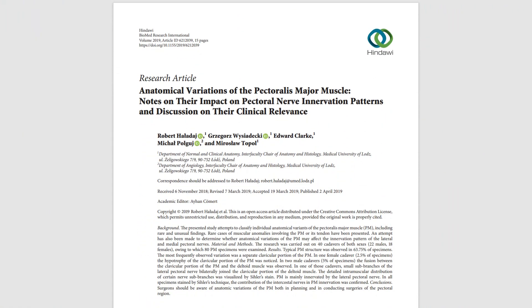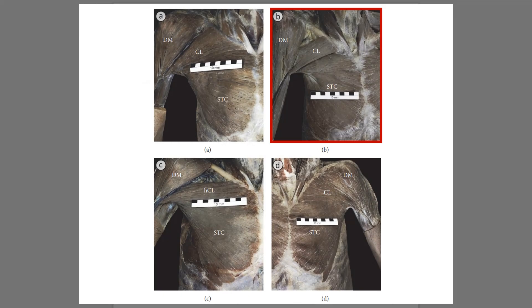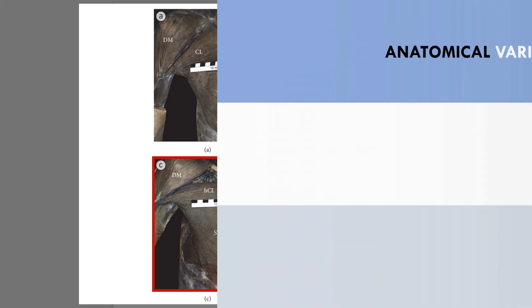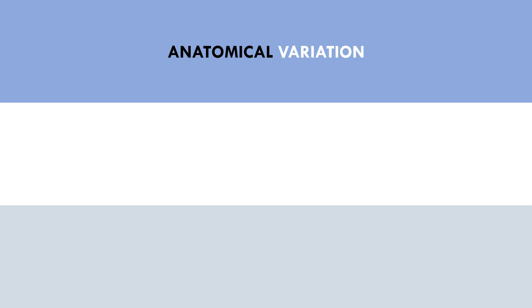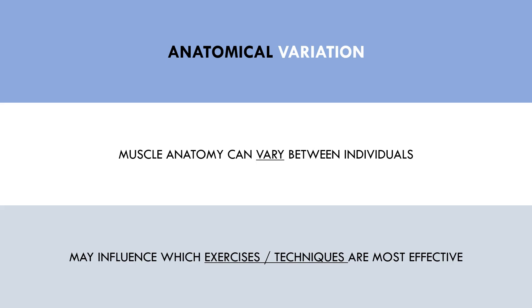For example, one study showed that the pec muscles have some fairly significant variations between individuals. One individual has a clear separation of the upper pec from the rest of the pec, another has a fan-like fibre structure, and another has a more horizontally oriented pec fibre structure. This variation will influence how different parts of the same muscles are recruited and trained, because the muscle always pulls from one attachment site to the other. So while we all have the same general muscle structure, there will be some variation between individuals, which may influence what exercises and lifting techniques target different regions of a muscle.